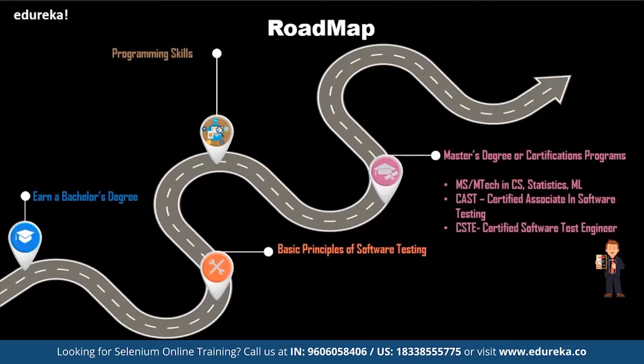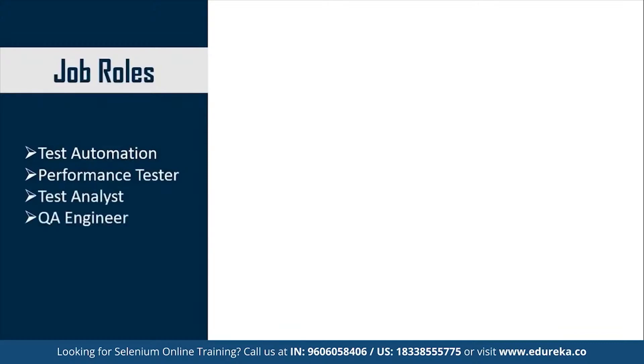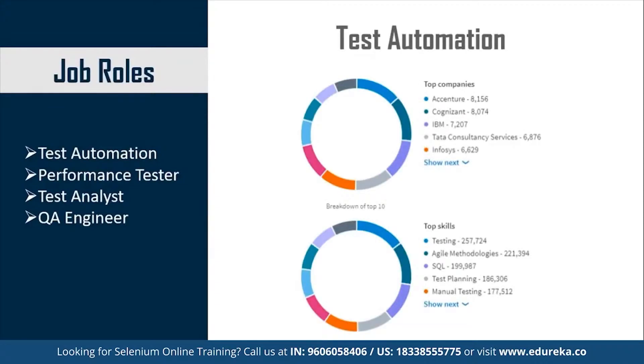Now let's look at the job roles for a test automation engineer. Some of the most common job profiles include Test Automation, Performance Tester, Test Analyst, and QA Engineer. Looking at LinkedIn statistics on these top profiles, the top companies in test automation include big names such as Accenture, Cognizant, IBM, TCS, and Infosys.